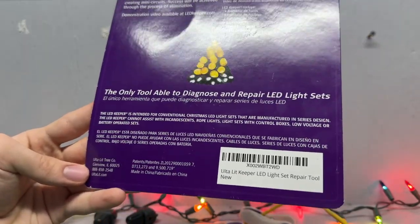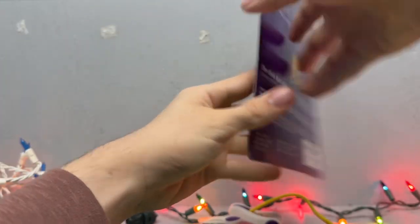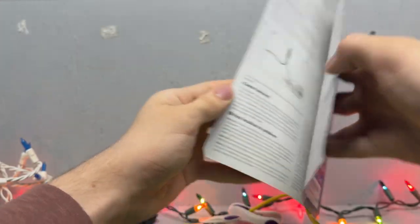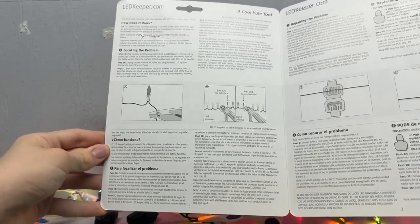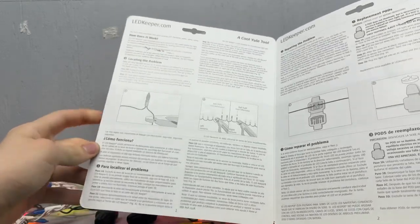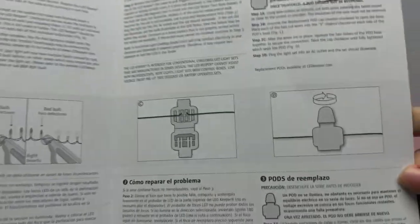And some other stuff. The company name and stuff. The ultra lit LED keeper light set repair tool. I'll also look at the instructions. It kind of opens up. You can read all of that if you want to. I'm going to describe the basic principles. The bottom is all Spanish. You can see how it works right here and there. And that's how to use the pods.